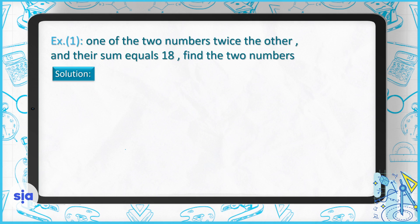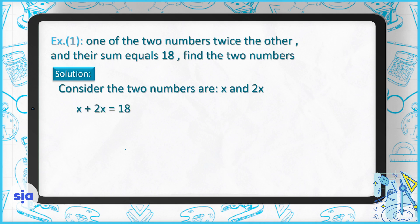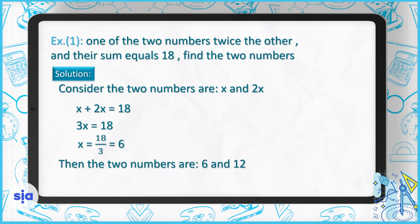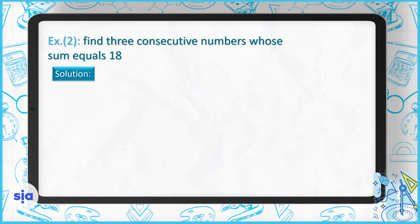Exercise number one: one of the two numbers is twice the other and their sum is 18. Find the two numbers. Let's make the first number X, so consider the two numbers are X and 2X. Their sum is 18, so X plus 2X equals 18. Combining gives 3X equals 18; dividing by 3, X equals 6. If the first one is 6, the second is 2 times 6, which is 12. The two numbers are 6 and 12.